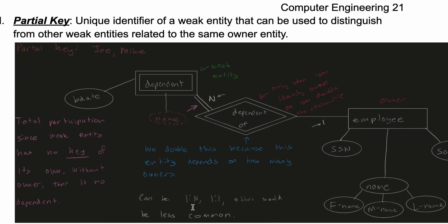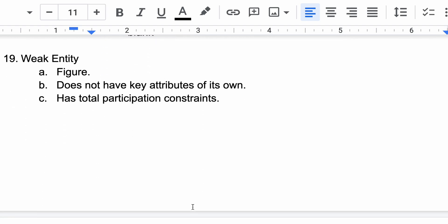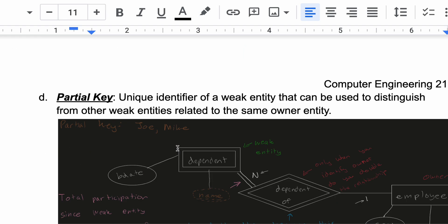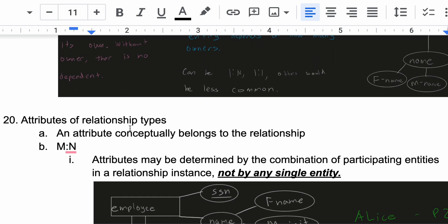And that is going to be it for our exploration of weak entities. Next, we are going to take a look at attributes of relationship types.